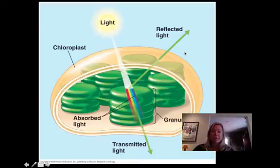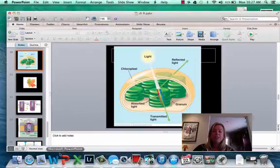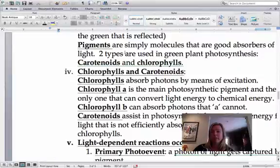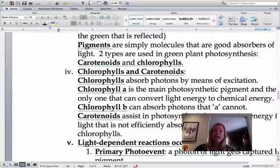So let's talk about pigments. What pigments actually are is they're going to be good absorbers of light. That's basically what they are. And when we talk about green plants and the type of photosynthesis that they do, they're going to have two pigments that they're going to be concerned about: chlorophylls and carotenoids.